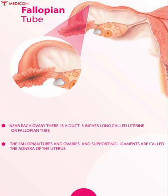Fallopian tube is located near each ovary — a duct about five inches long called the uterine or fallopian tube. The ovum, released from the ovary, enters the fallopian tube, caught up by the finger-like ends of the uterine tube called fimbria, where fertilization takes place.